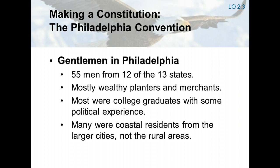James Madison claimed that factions arise from the unequal distribution of wealth. One faction is the majority, composed of the many who have little or no property. The other is the minority, composed of the few who hold much wealth. The delegates thought that, if left unchecked, either majority or minority faction could become tyrannical. The founders believed that the secret of good government is balanced government. A limited government would have to contain checks on its own power. As long as no faction could seize the whole of government at once, tyranny could be avoided. In Madison's words, ambition must be made to counteract ambition.